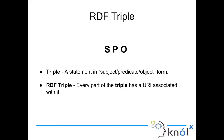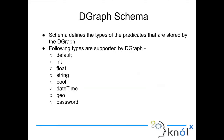Let us get on to DGraph schema. Everyone here knows about databases and what schema is. DGraph schema is the same concept. Schema defines the types of the predicates stored by DGraph. Every predicate — whether a property or an edge — will have a type, and that constitutes the schema of DGraph.